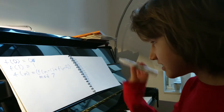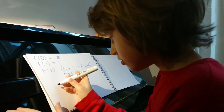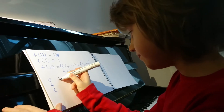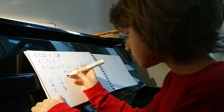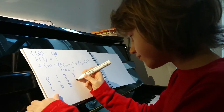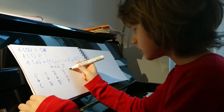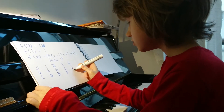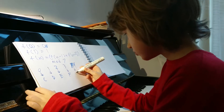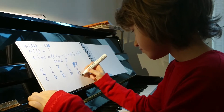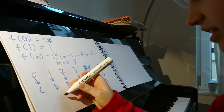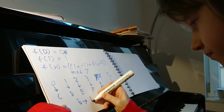So we start with 0, and I'm also going to focus on this map: 0 goes to C, 1 goes to D, 2 goes to E, 3 goes to F, 4 goes to G, 5 goes to A, 6 goes to B. These are musical notes.